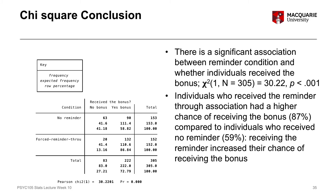More helpfully, the next sentence interprets the direction of results. Individuals who received the reminder through association had a higher chance of receiving the bonus — 87% — compared to individuals who received no reminder, whose chance of receiving the bonus was 59%. Therefore, receiving the reminder increased individuals' chance of receiving the bonus. This is a more useful interpretation beyond just stating significance, because it explains what direction the association is going in.